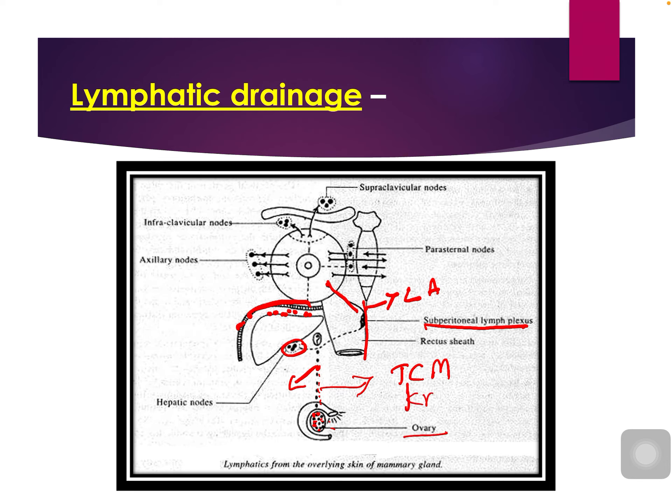Secondary deposits in the ovary will be called Krukenberg's tumor. We have learned the situation and extent, features of the skin overlying the mammary gland, structure of the mammary gland, the difference between male and female mammary gland, arterial supply, and lymphatic drainage.